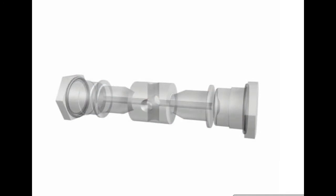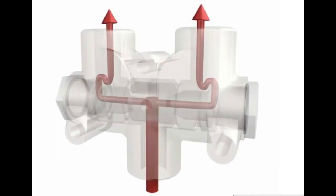Inside the housing is a sliding spool with cross-drilled holes in the center and through the entire length of the spool. The spool is able to move freely in the housing. Flow from the inlet enters the center of the spool through the cross-drilled hole. The flow divides and flows to both ends of the spool, and fluid flows out both ends of the spool.